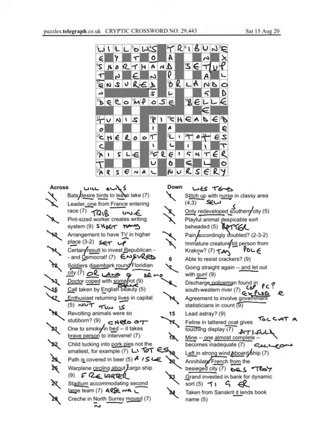Fourteen down, agreement, to involve government statisticians, well the Office of National Statistics, we heard a lot with COVID, is the ONS, and account, could be a census, so ONS going into census, gives us consensus, which is an agreement.